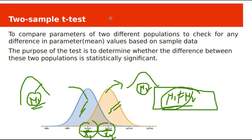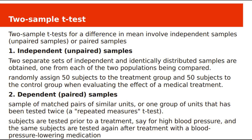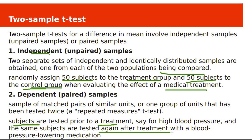We need to check whether the difference is statistically significant or not by using two sample tests. The two samples may be dependent or independent. For independent samples, consider evaluating the effect of a medical treatment: 50 patients are assigned to a treatment group and 50 to a control group. The treatment group receives medication while the control group receives no treatment or standard treatment. These are called independent samples. Dependent or paired samples are the same subjects tested twice — before and after the treatment, such as blood pressure of 50 patients before and after treatment.